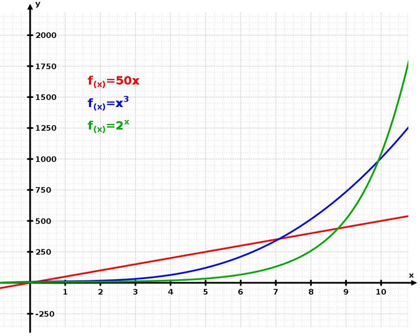The formula for exponential growth of a variable x at the growth rate r, as time t goes on in discrete intervals, that is, at integer times 0, 1, 2, 3, is x(t) = x₀(1 + r)^t, where x₀ is the value of x at time 0.